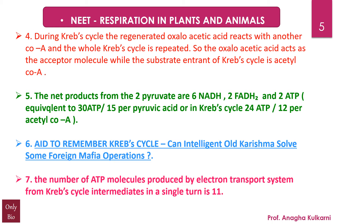Point number 7: The number of ATP molecules produced by the electron transport system from Krebs cycle intermediates in a single turn is 11.